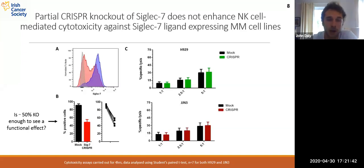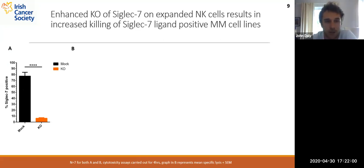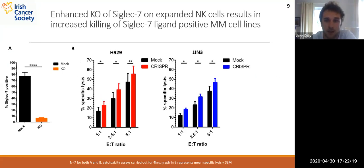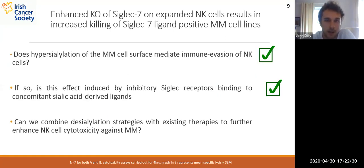We therefore decided to try and achieve a higher level of knockout. Using three guides from a CRISPR optimization knockout kit from Synthego, we achieved an almost 90% knockout with excellent NK cell viability. In our first donor tested, we saw really strong increases in killing of the myeloma cells by the CRISPR-edited NK cells versus the mock NK cells. There was a lot of variance between donors, but from N=7 we ended up seeing statistically significant increases in killing by the CRISPR cells versus the mock, confirming that Siglec-7 is at least in part responsible for regulating NK cell activity against myeloma.